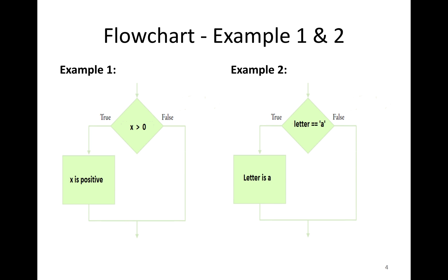In a flowchart, the decision symbol has true and false branches. For example: if x is greater than 0, the true branch says 'x is positive'; false means it is not. Another example: if letter equals 'a', the true branch says 'letter is a'; otherwise it goes to the false branch.